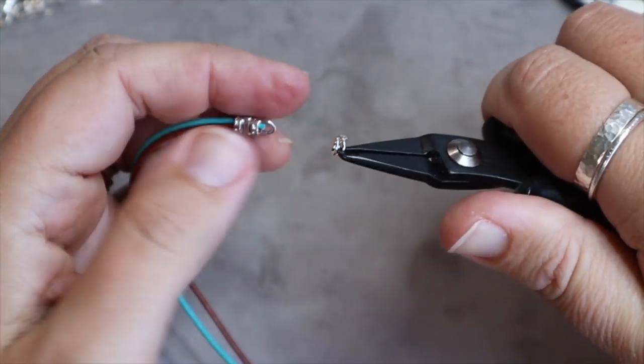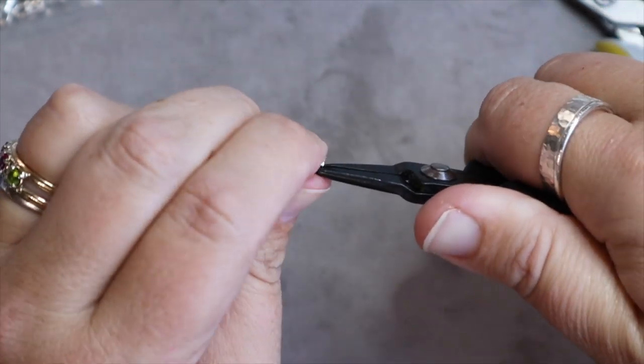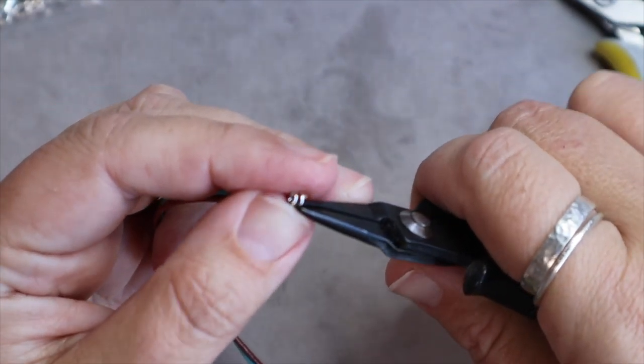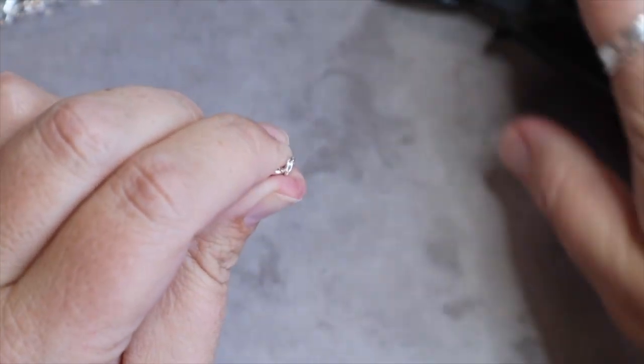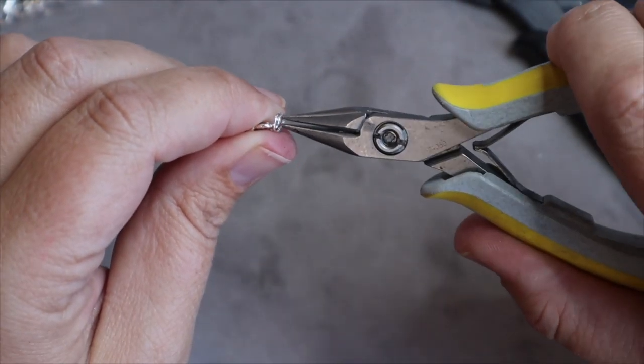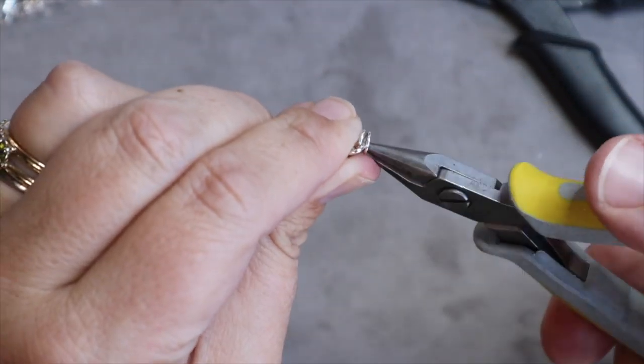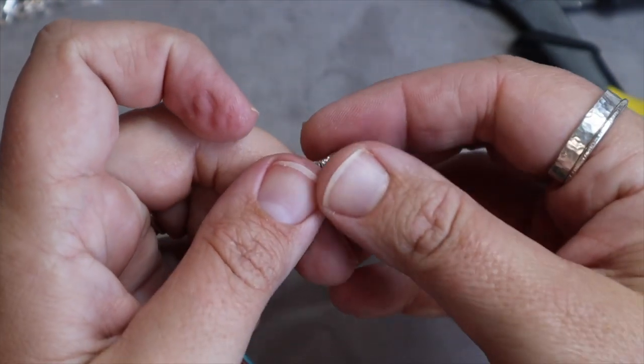I guess it helps to make sure it's there. There we go, making sure that is inside there and then I'm going to just turn it just like a key ring to get my piece on there. So now you can see it is on there and it's not going to pull off because it is the split ring.